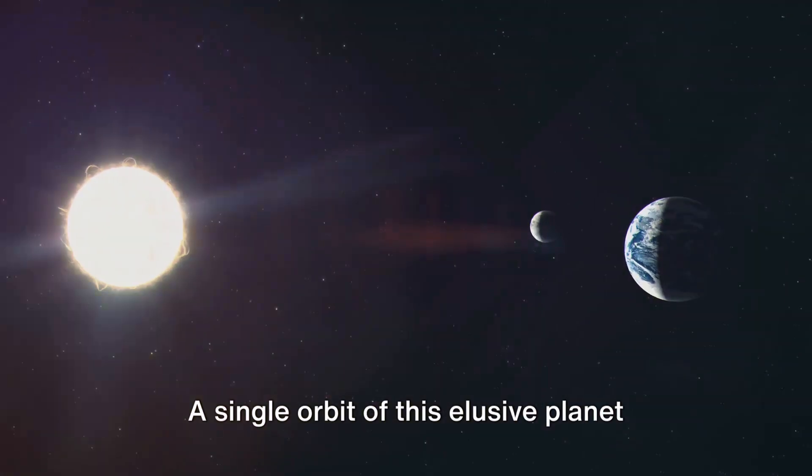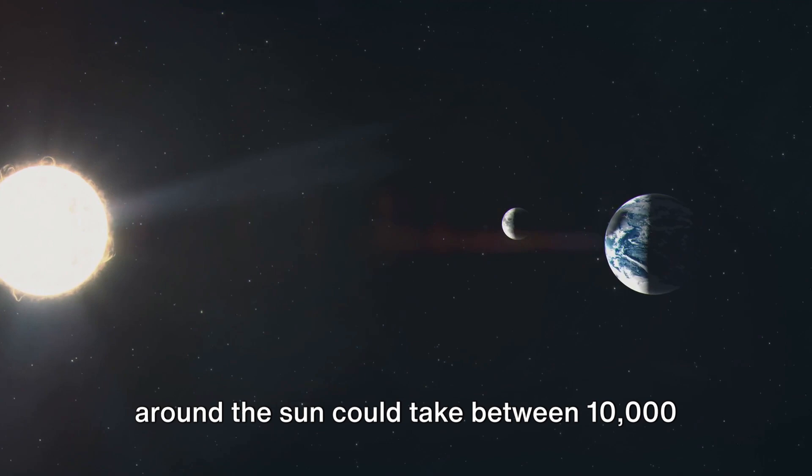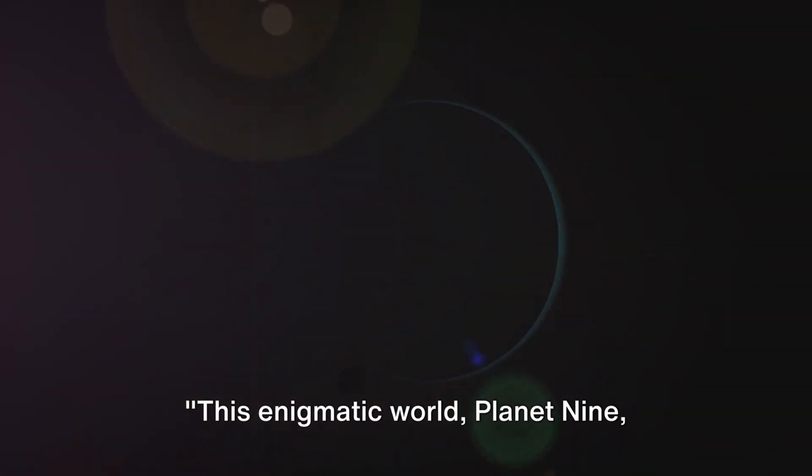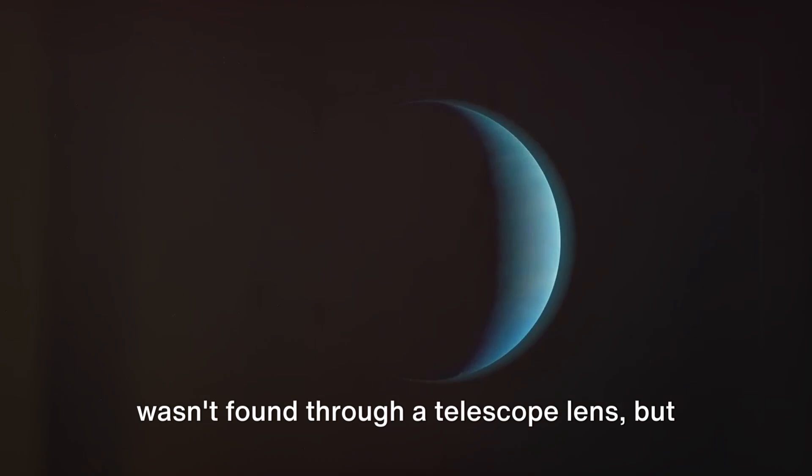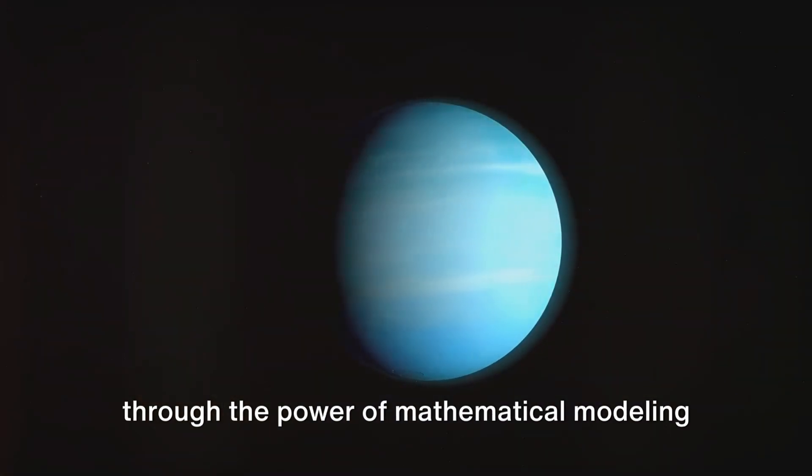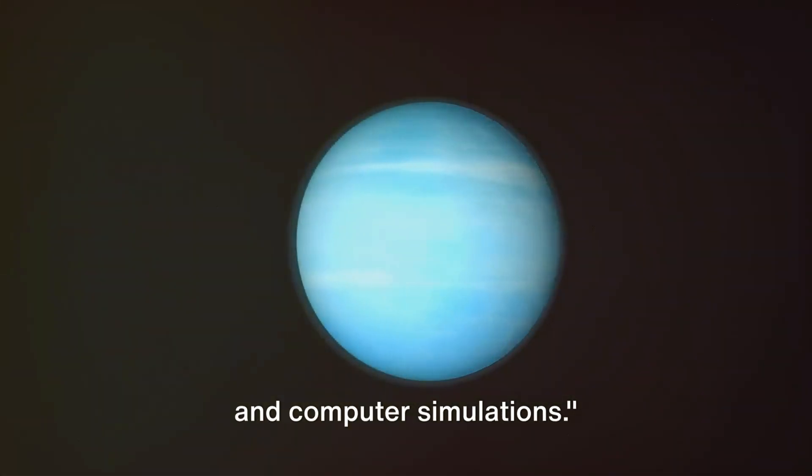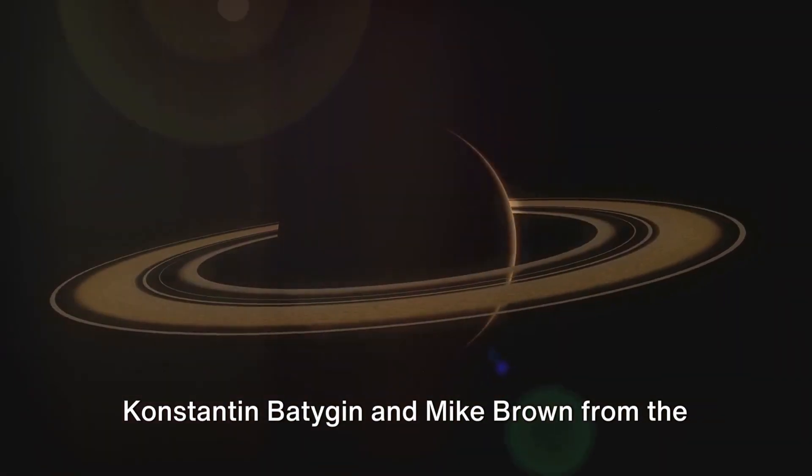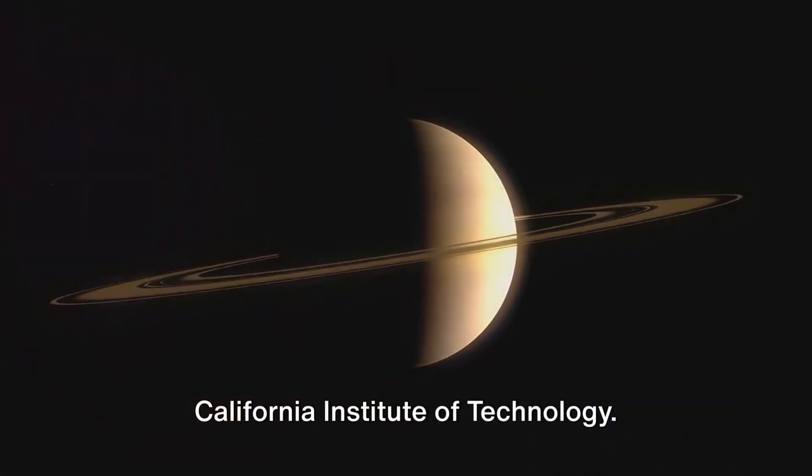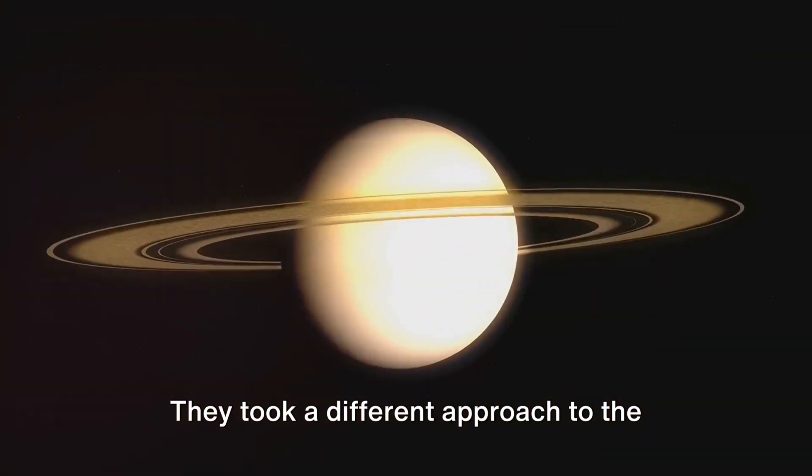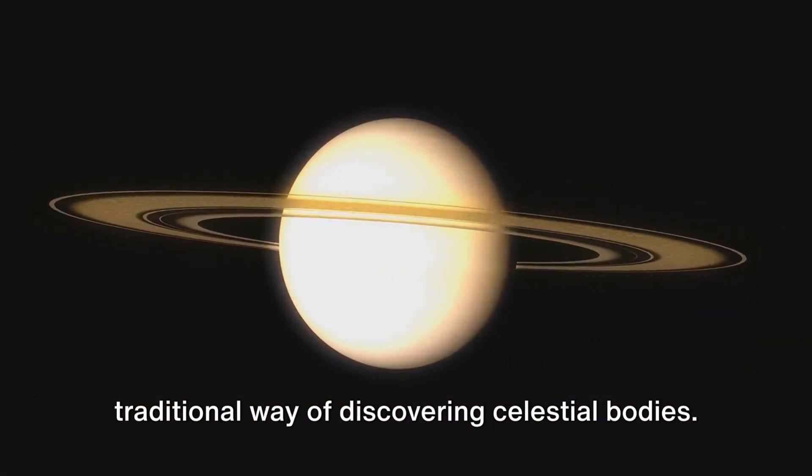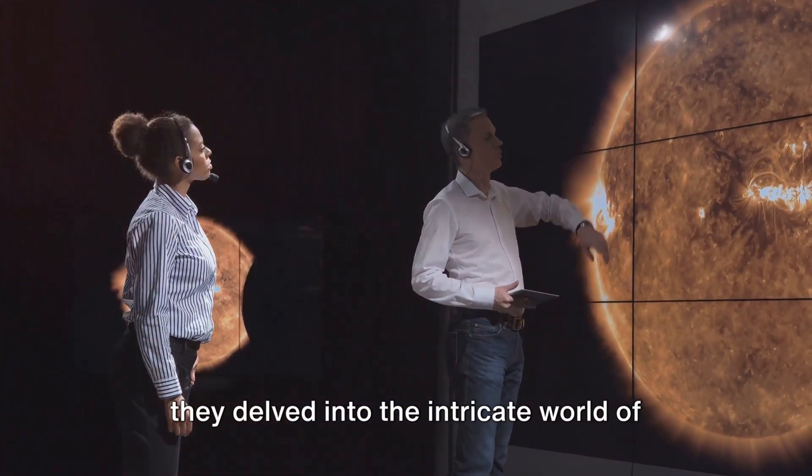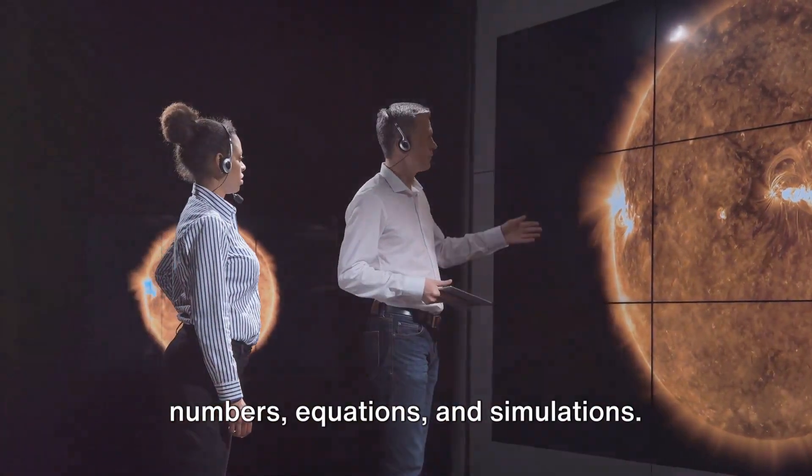A single orbit of this elusive planet around the sun could take between 10,000 and 20,000 years. This enigmatic world, Planet Nine, wasn't found through a telescope lens, but through the power of mathematical modeling and computer simulations. Dive into the minds of the researchers Constantine Battegan and Mike Brown from the California Institute of Technology. They took a different approach to the traditional way of discovering celestial bodies. Instead of peering through a telescope, they delved into the intricate world of numbers, equations, and simulations.